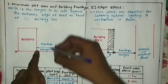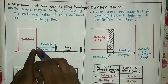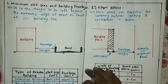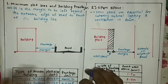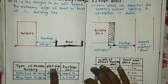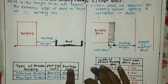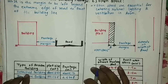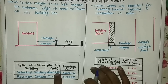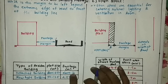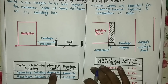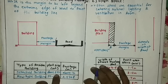This frontage margin must be kept while constructing a building. You cannot construct the building right up to the road — you have to keep the frontage margin and then start your building construction. For a detached building with plot size about 200 square meters, the frontage should be about 12 meters.